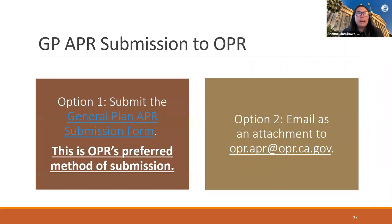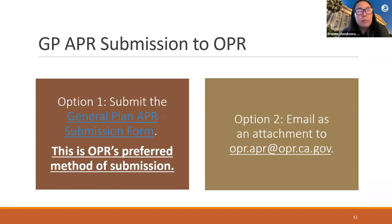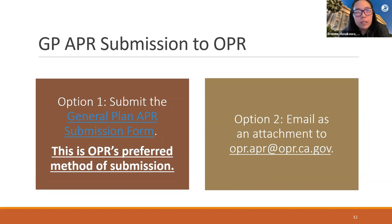The way to submit your APR to OPR has changed a little bit. We added a new way for the benefit of all jurisdictions: a SurveyMonkey form called the general plan APR submission form, which is OPR's preferred method of submission for general plan APRs this year. We are still accepting general plan APRs by email at opr.apr@opr.ca.gov. The submission form will ask for basic contact information, jurisdiction identification information such as whether you are a city or county, name of jurisdiction, type of reporting period — fiscal or calendar — and the year being described, as well as the date of presentation or acceptance by the local legislative body.